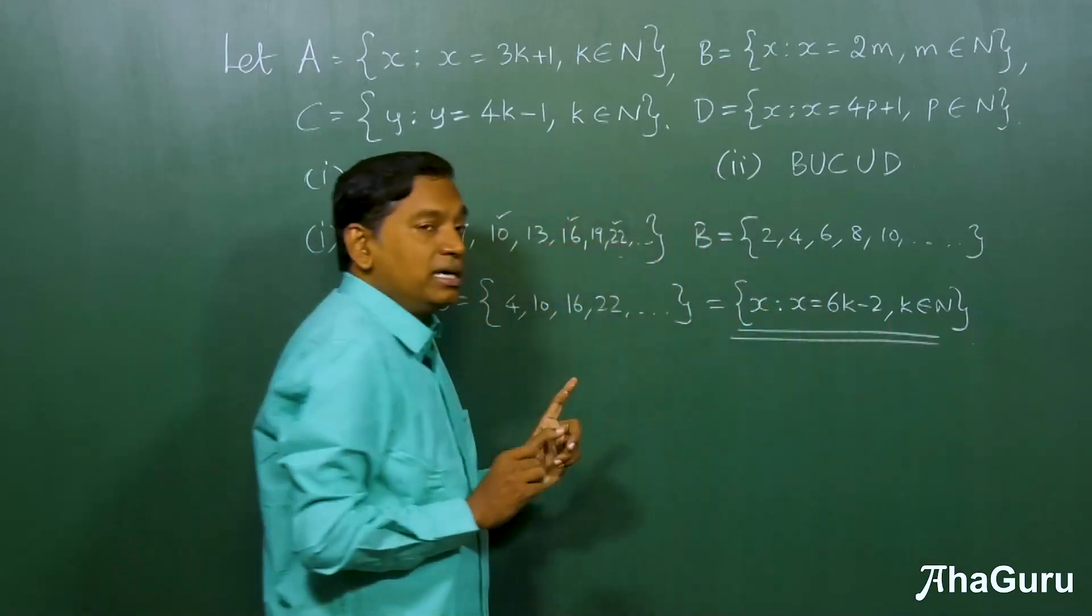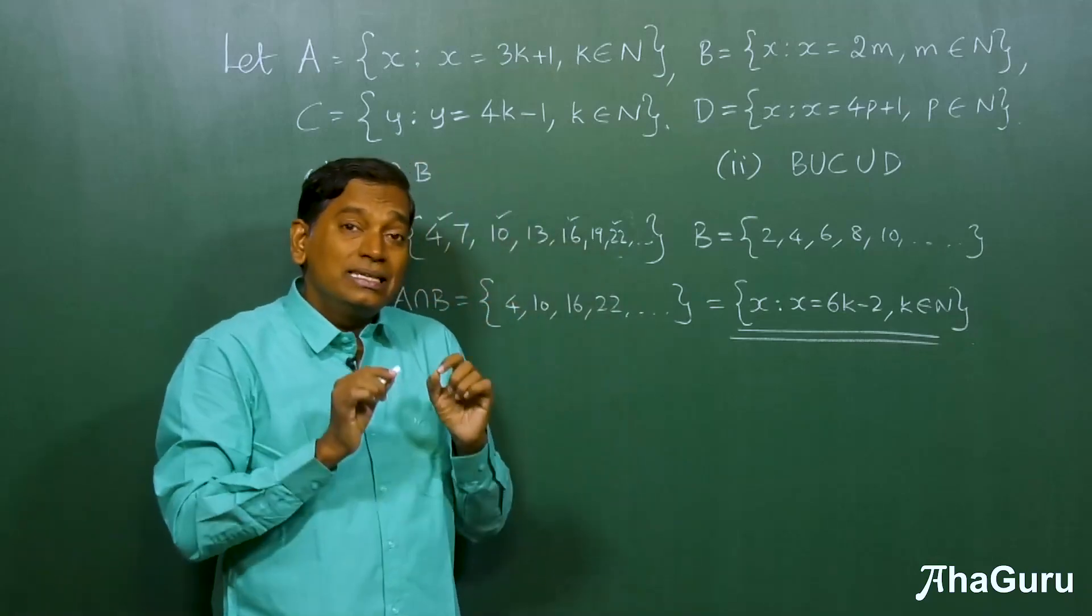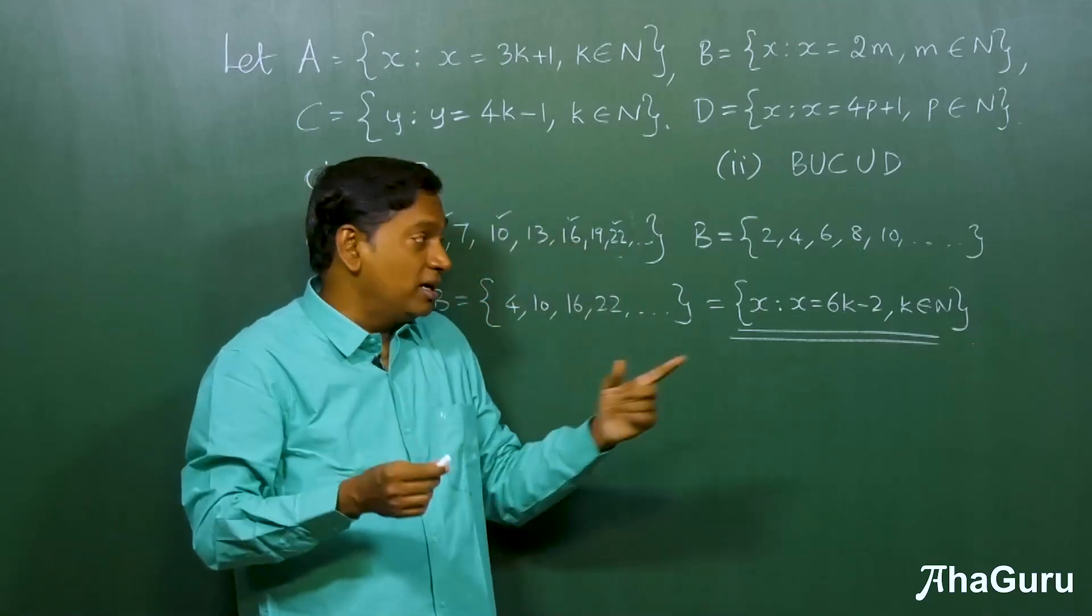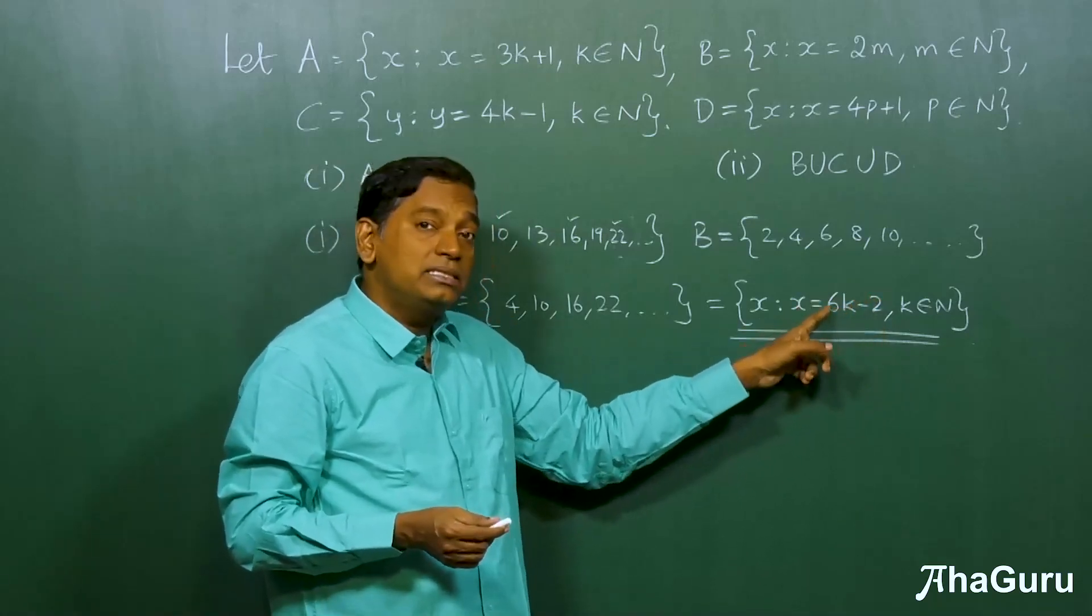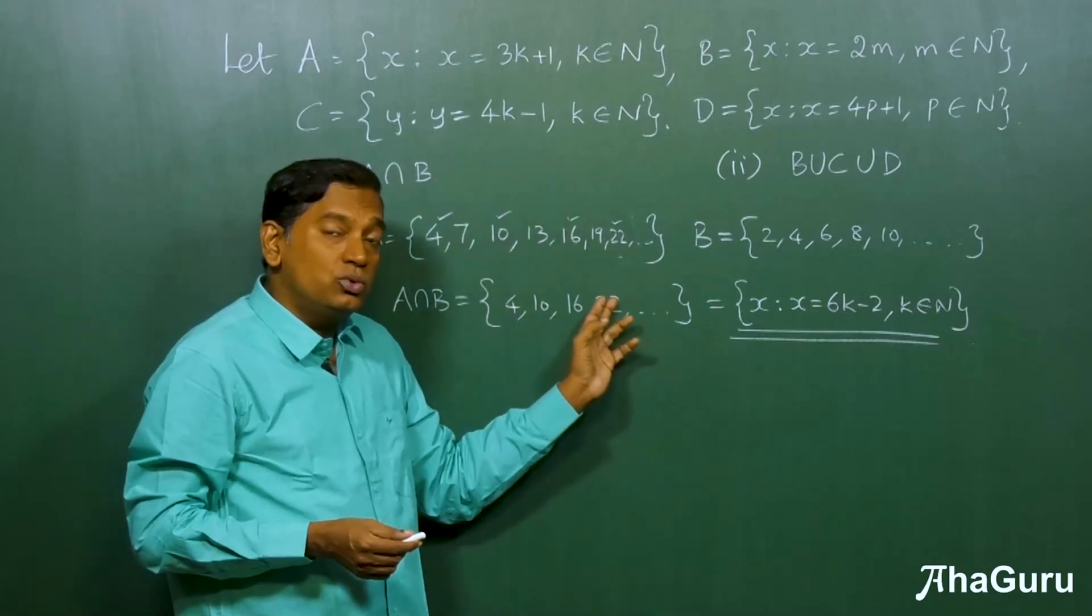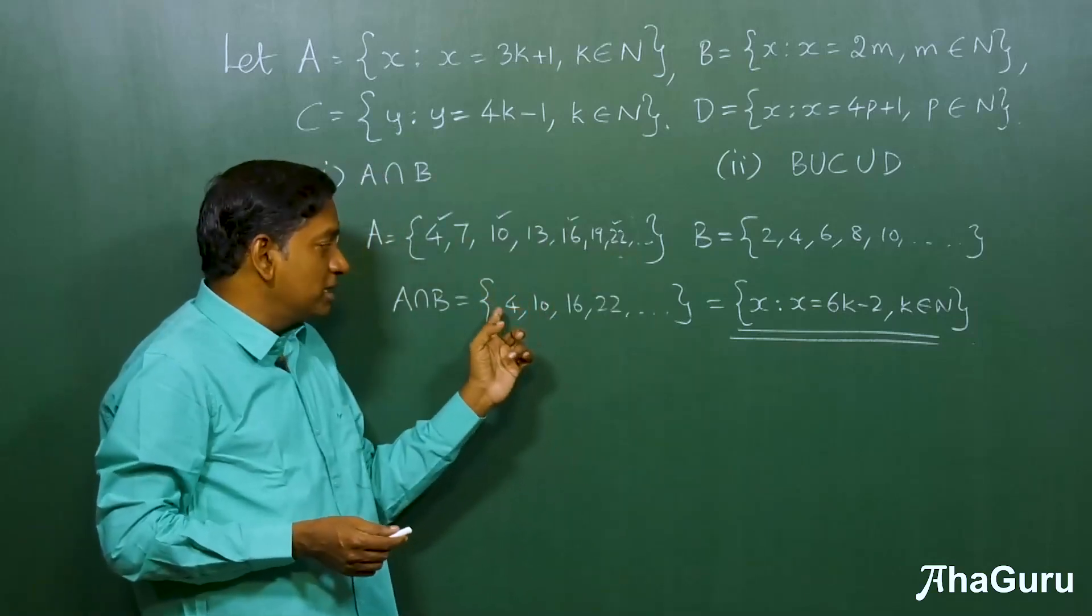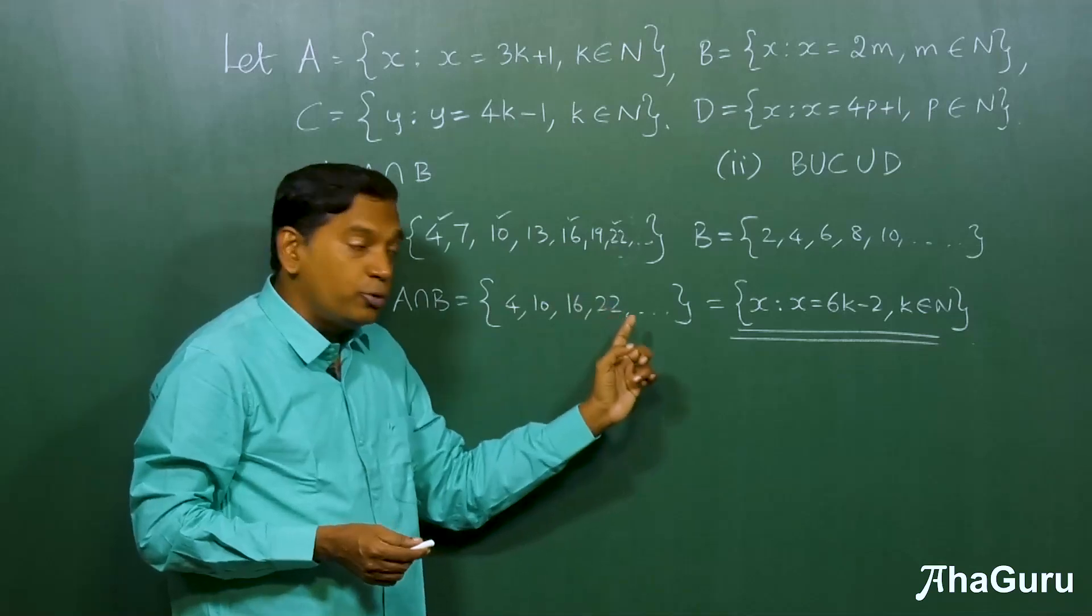And this is the answer for A intersection B. Of course, you should know that the set builder notation is not unique. I could have written it in some other way. Maybe something like 6p plus 4, where p belongs to whole numbers. Because, you can do 0 plus 4, 6 plus 4, 12 plus 4, etc.